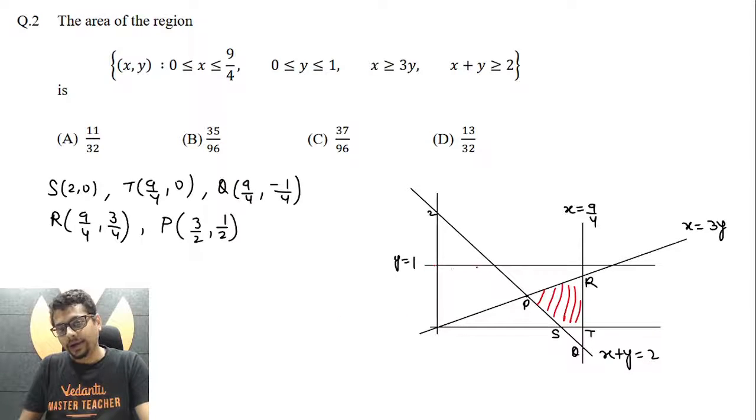So as we plot, y equals one is this, x equals nine by four is this, y is supposed to be between zero and one, x is supposed to be between zero and nine by four, x plus y equals two is this.